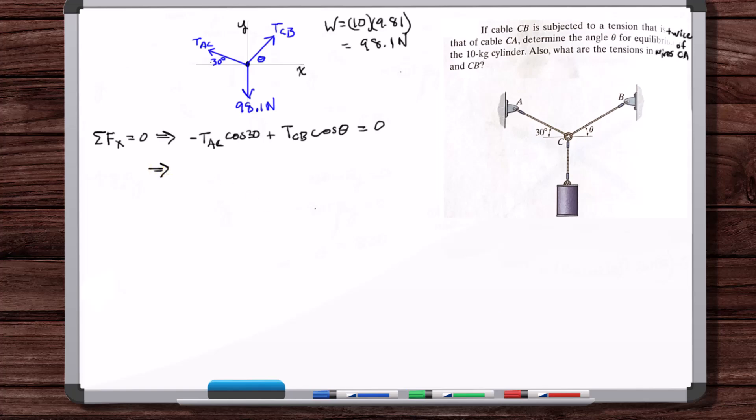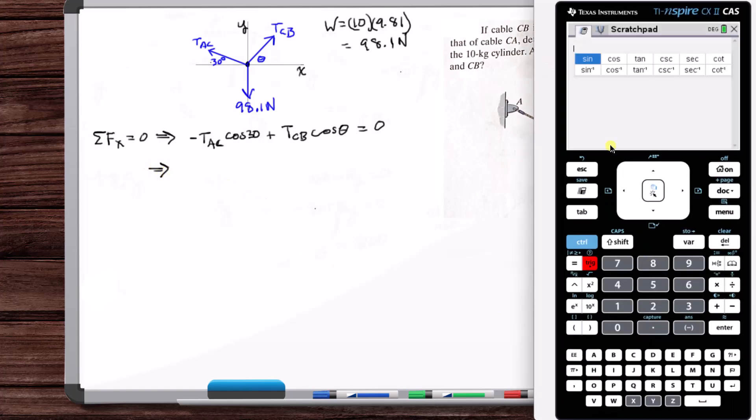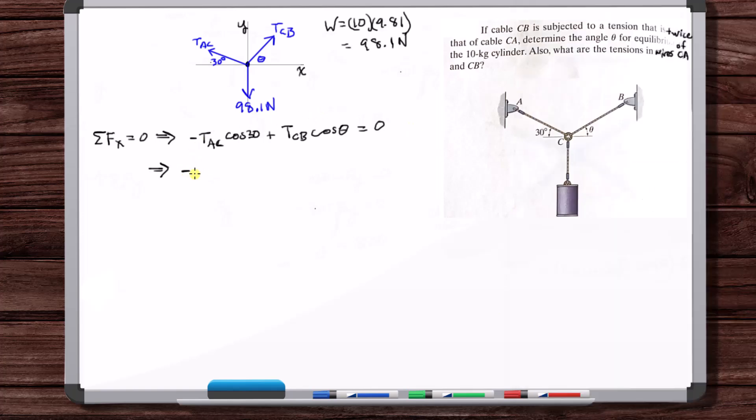So cosine of 30 is root 3 over 2, which is 0.866. So minus 0.866 T_AC plus T_CB cosine of theta is equal to zero. Okay, so that's one equation.